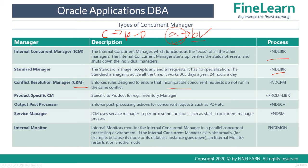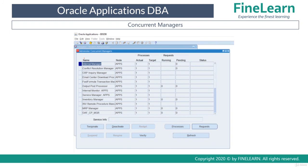Several products can have their own specific concurrent managers — for example the Inventory Manager for the inventory product. There is also the Output Post Processor, or OPP. The main purpose of OPP is to process the report output after the request completes. For example, once a request finishes and its output is present, the OPP processes that output and renders it in a PDF format. This post-processing is done by the OPP.